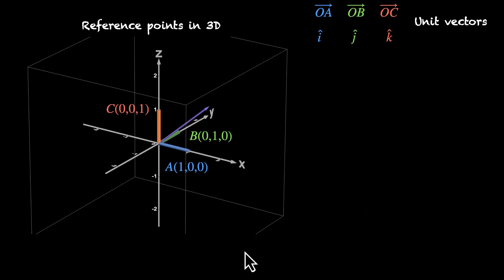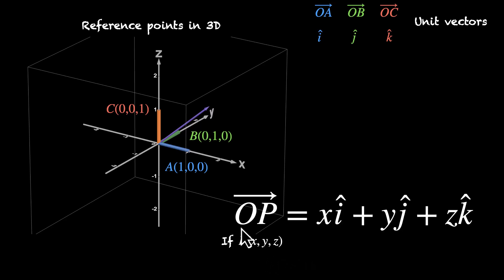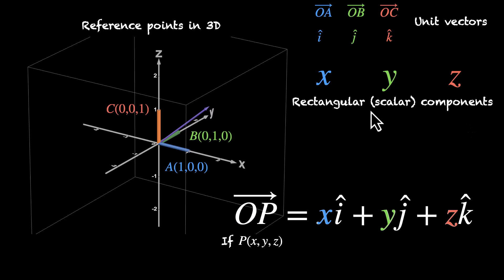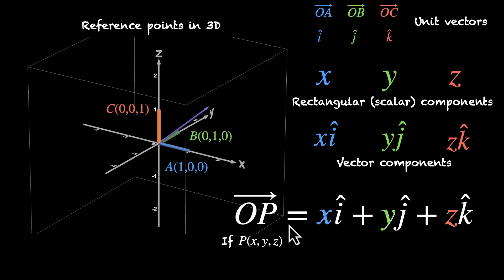For a point P with coordinates (x, y, z), the position vector OP equals x i-cap plus y j-cap plus z k-cap. This means to reach P from origin O, we move x units along the positive x-axis, y units along the positive y-axis, and z units along the positive z-axis. The values x, y, and z are called the rectangular or scalar components, and x i-cap, y j-cap, z k-cap are the vector components of position vector OP.